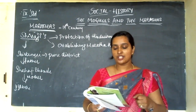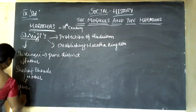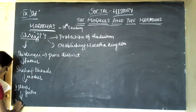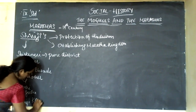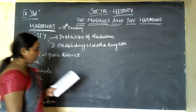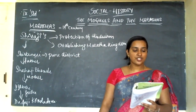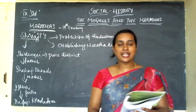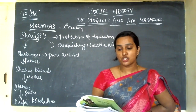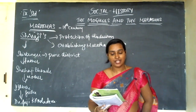Dadaji Kondadev was Shivaji's guru, who trained him in arms and scriptures. Shivaji achieved proficiency in bodybuilding, fencing, horse riding, and other field events in his childhood. He dreamt about establishing an independent kingdom and made Pune his center, starting the process of expanding his kingdom.